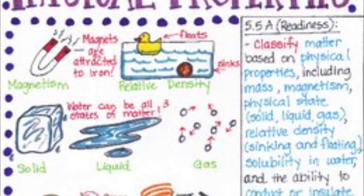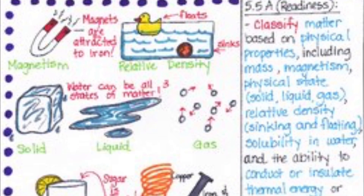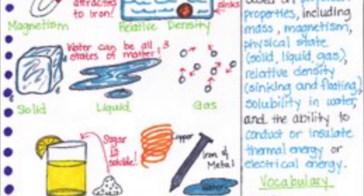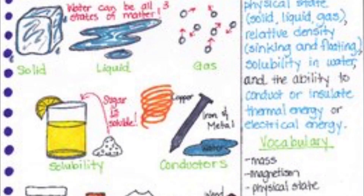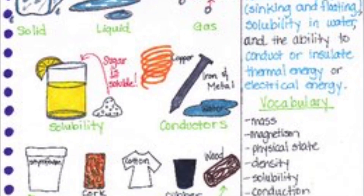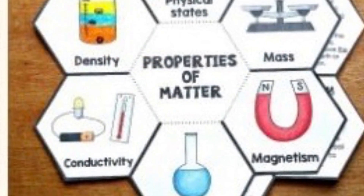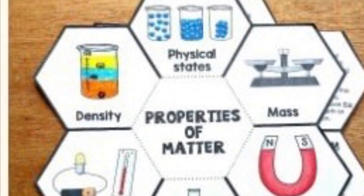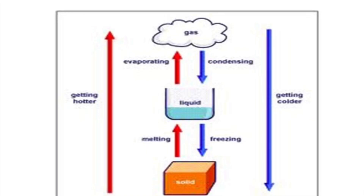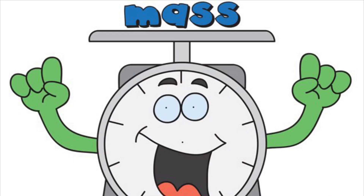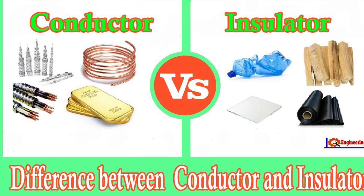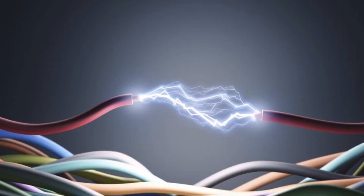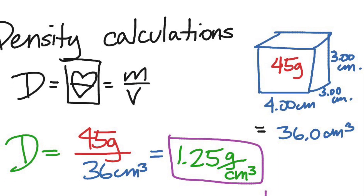How can we mix all this matter? Tell me its physical properties: its physical state, magnetism, mass, insolubility. If it conducts or is insulated — thermal or electrical energy. Depending on volume and mass, that determines its density.